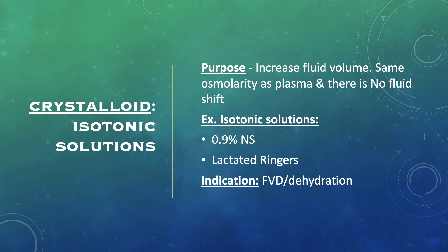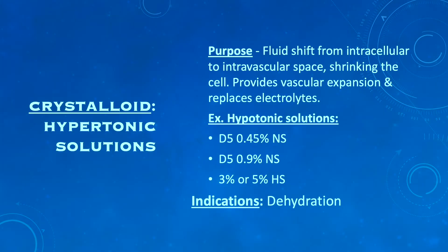Isotonic solutions increase fluid volume within vessels and have the same osmolarity as plasma, which is why there will be no fluid shift. Examples include 0.9 normal saline and lactated Ringer's, which also provides electrolyte replacement. Indications for isotonic solutions include hypovolemia and dehydration. It is important to monitor for fluid volume overload when administering isotonic solutions.